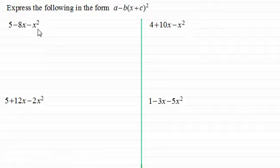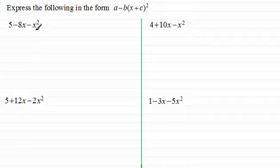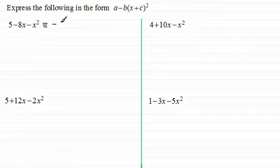So for this first one we've got 5 minus 8x minus x squared, and we've got to write it in the format a minus b times x plus c, all squared, where a, b and c are constants. To do this we write the identical sign and we turn to the negative x squared term and pull out a minus in front of a bracket. Remember this is minus 1.